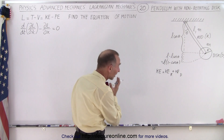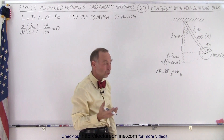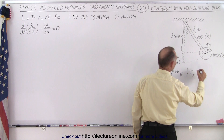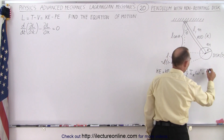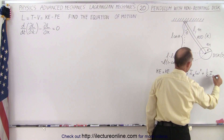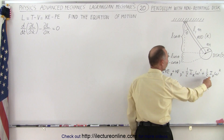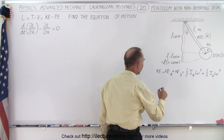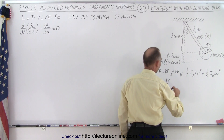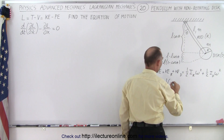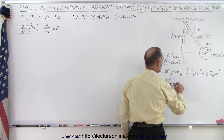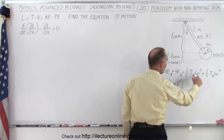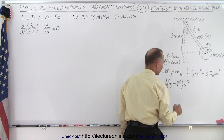Since the rod is oscillating back and forth attached to a single point, we use rotational kinetic energy. This equals one-half the moment of inertia of the rod times omega squared, plus one-half the moment of inertia of the disc times omega squared. The moment of inertia of a rod rotating about its end is one-third m l squared, and omega can be written as theta-dot.